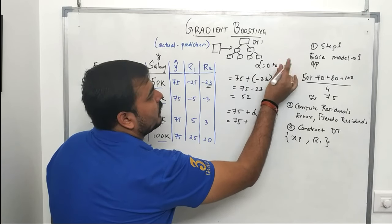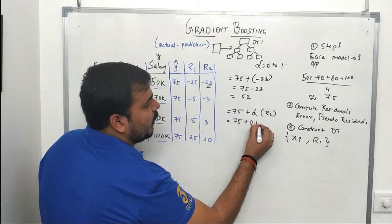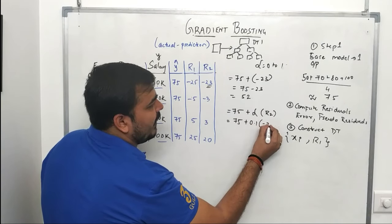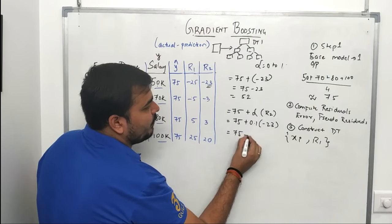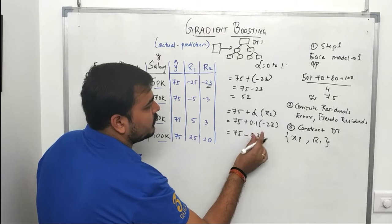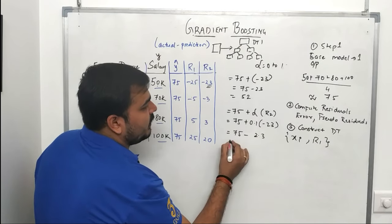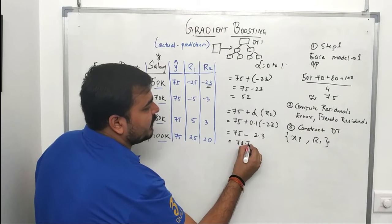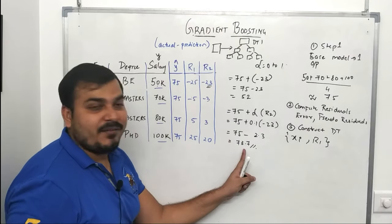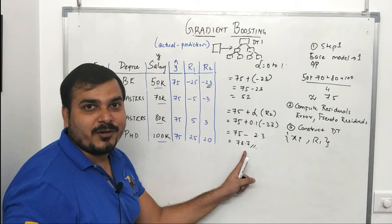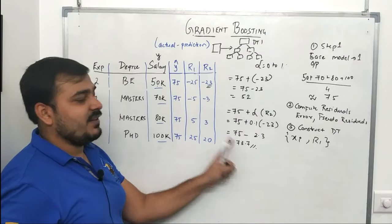Suppose I take the learning rate as 0.1. Then the residual minus 23 becomes minus 2.3, so the prediction becomes 75 minus 2.3 equals 73.7. This value still has a large difference from the actual salary of 50, so we need to continue adding more decision trees.